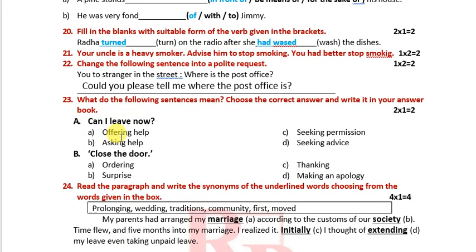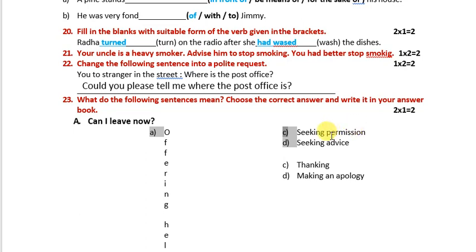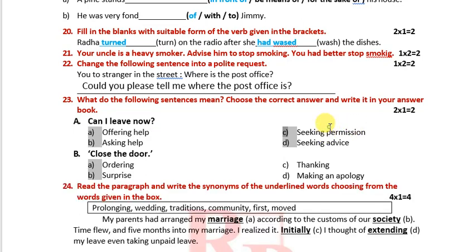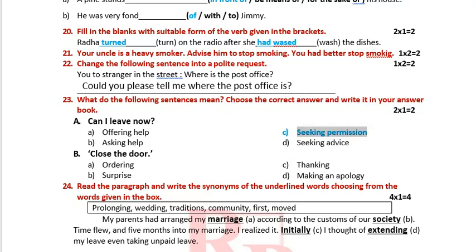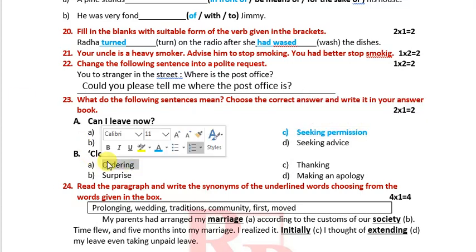What do the following sentences mean? Choose the correct answer. 'Can I leave now?' — Yes, it is seeking permission. 'Close the door.' — This is ordering.